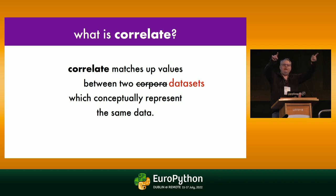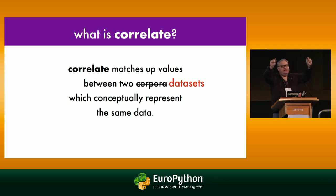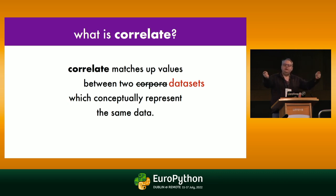Imagine you have two datasets that have some values inside, and there really should be matches between them — like this is really the same piece of data as this, but it's in a different format. How do you find matches between those two?